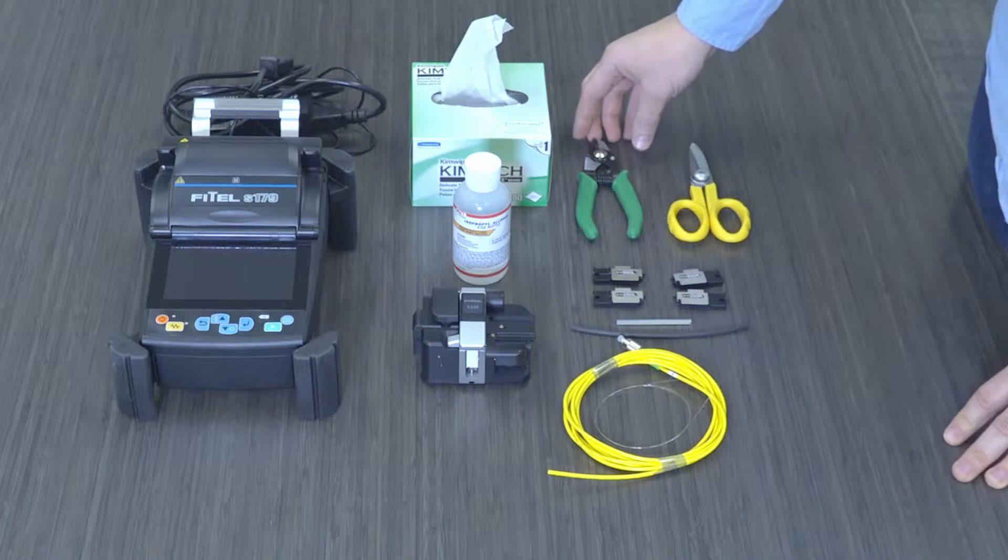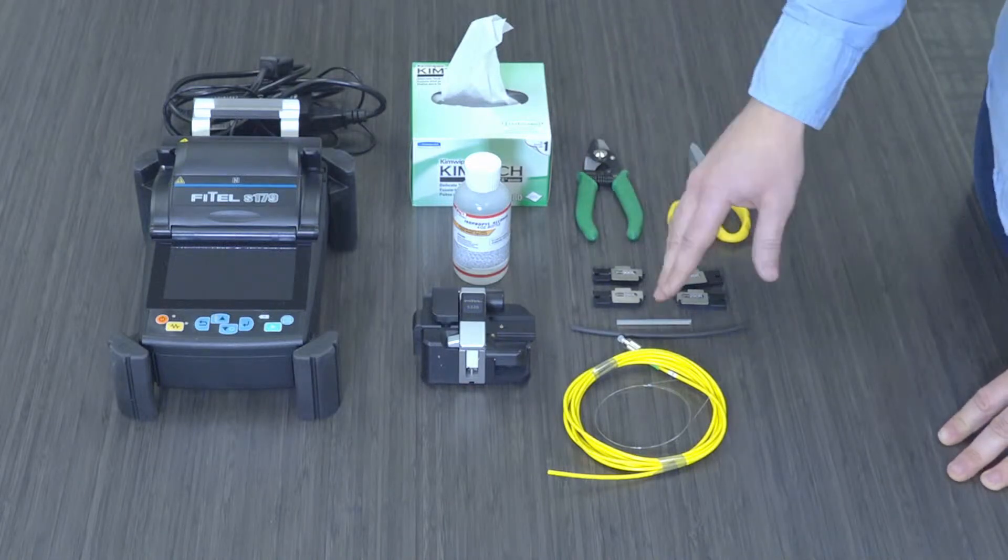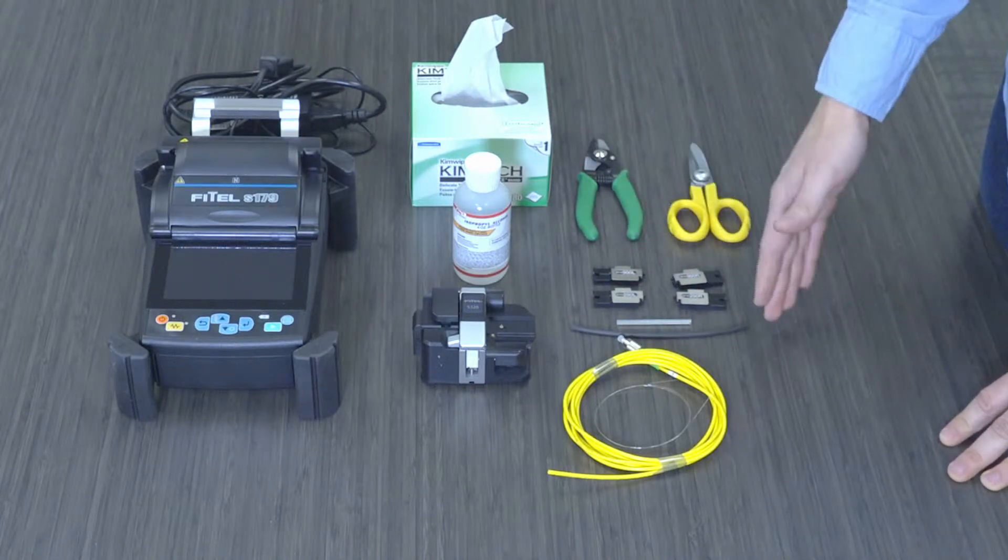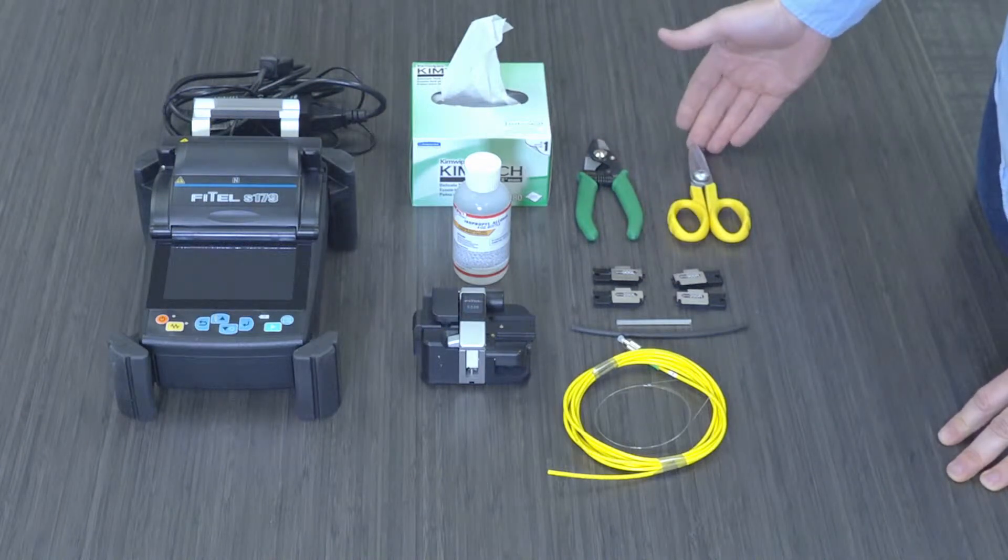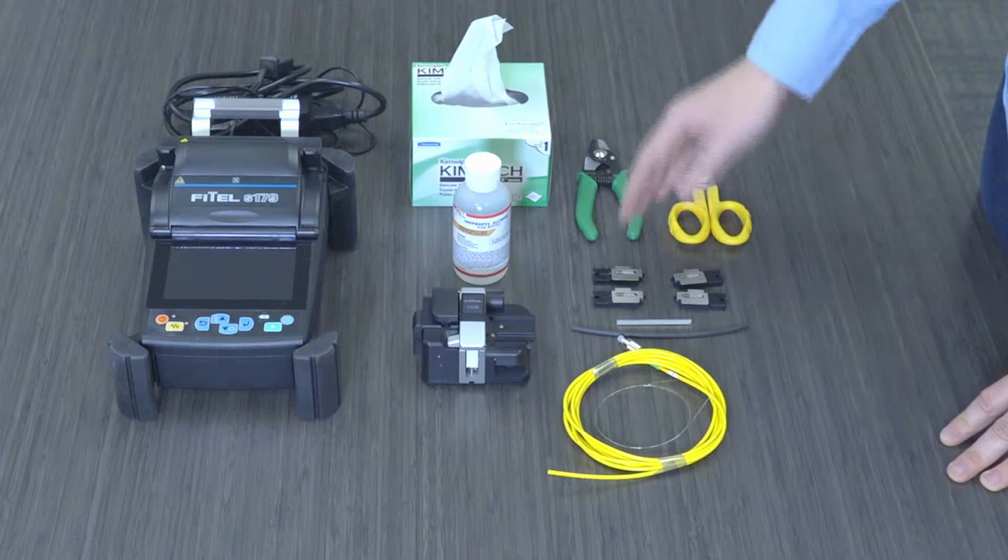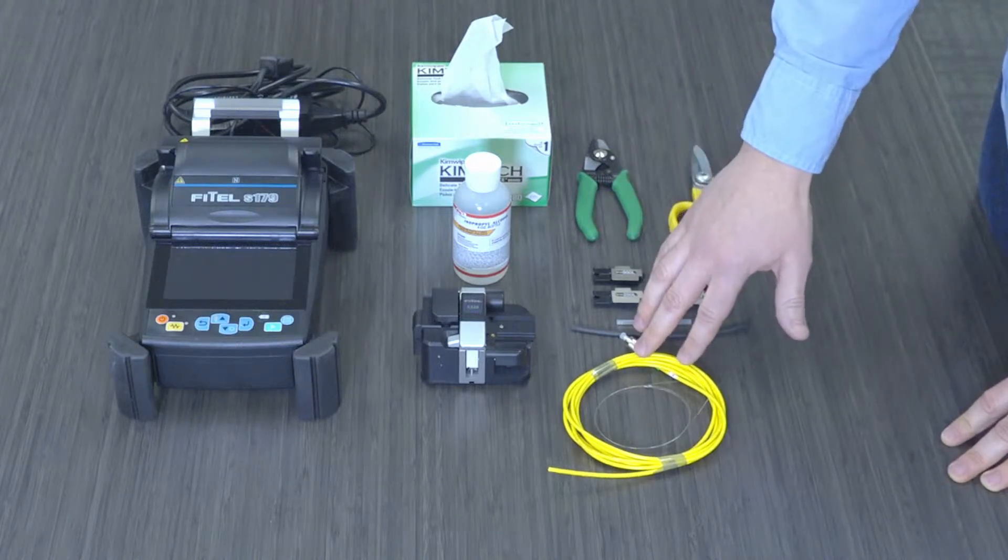We have some fiber strippers which will allow us to strip the jacket, the buffer material, and the coating off of any single mode fiber optic cable. We have some Kevlar scissors to cut away some of the internal materials found in some of these FC-APC patch cords.